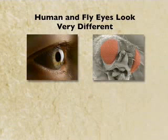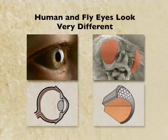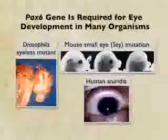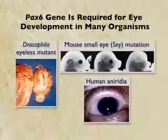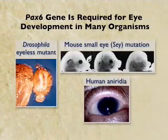Light-gathering organs all in a little crystalline array. The histology of the eyes is quite different: a single light-gathering lens for the mammalian eye, and this array of independent little light-gathering units in the compound eye of insects. Although those eyes look very different, it turns out that the same toolkit gene is required for eye development in many different organisms.